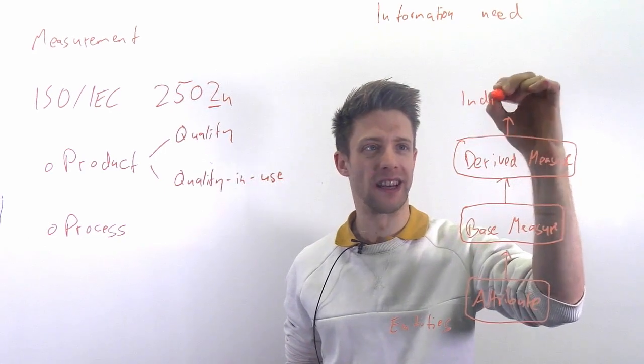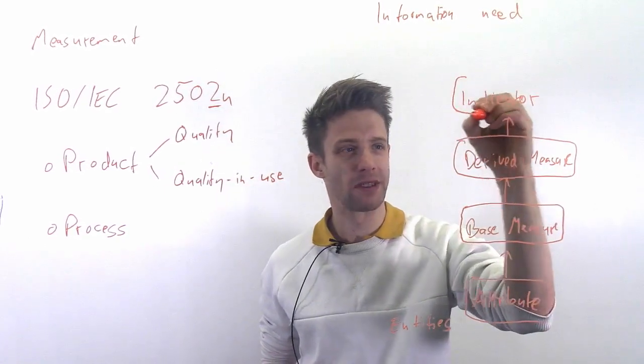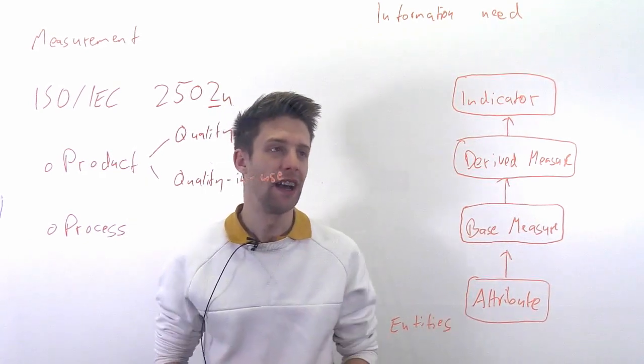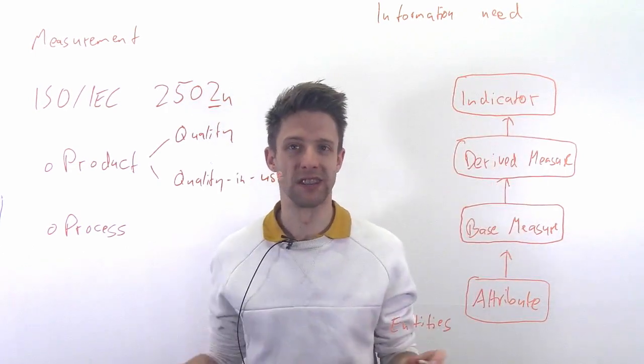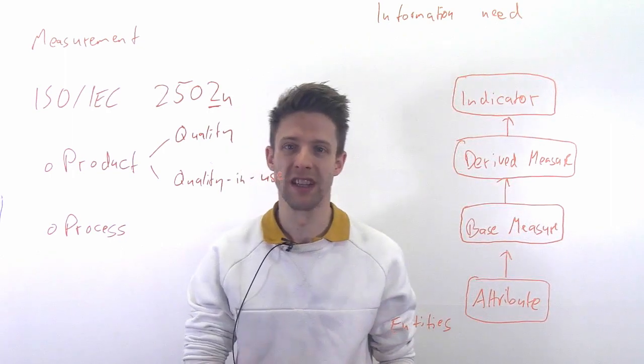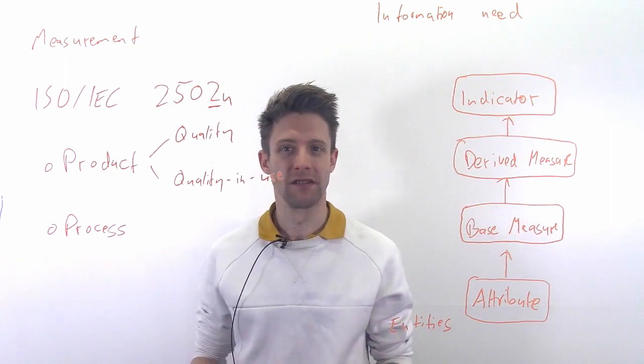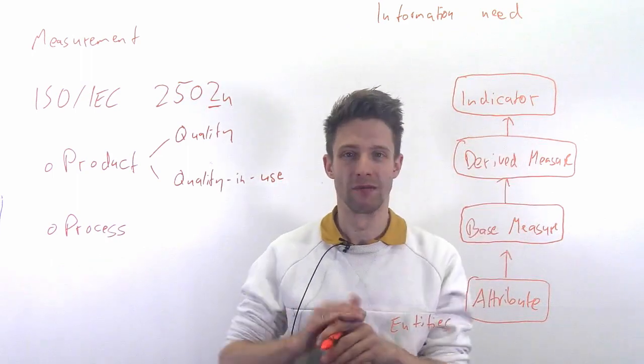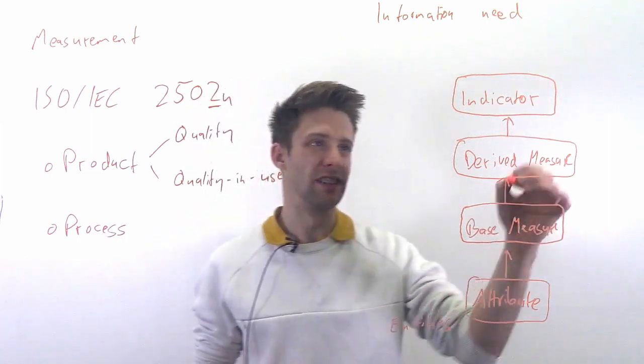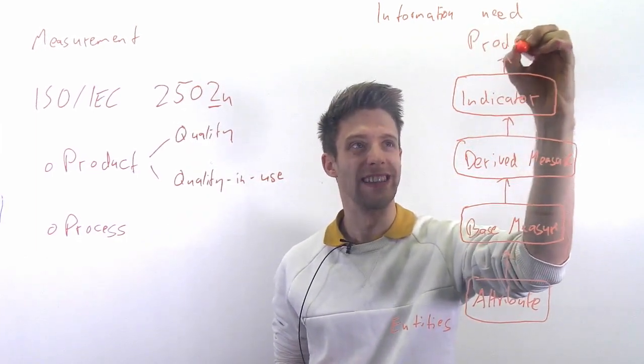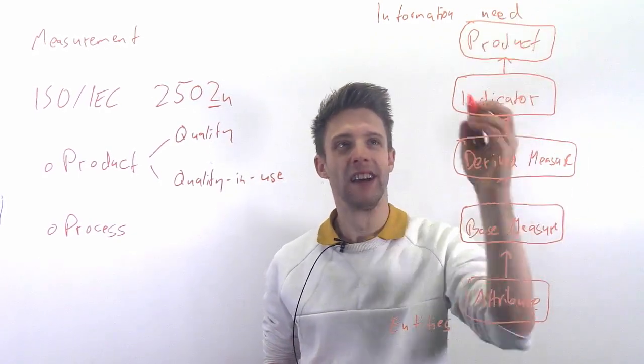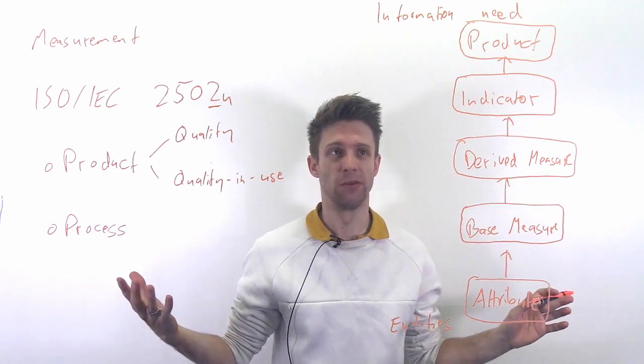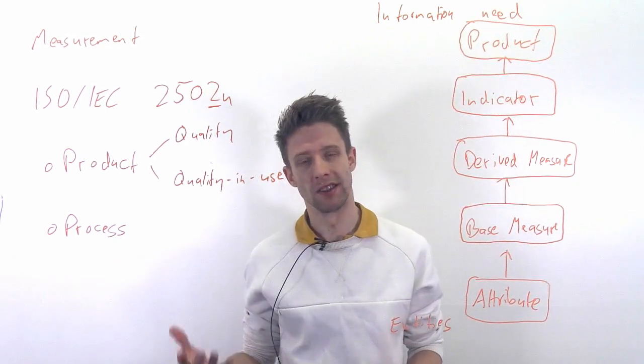So it's more interesting to look at the number of bugs compared to, or in relation to, the overall size of the product. So there's a difference whether you have 10 bugs and one function or you have 10 bugs and a hundred functions, of course. So this is where you get to the derived measures. You usually need to have multiple of these base measures together to get to something that actually tells you something. Now this is already quite good, but usually it does not quite fulfill your information need. Usually you get to something that is like an indicator - that's an abstract way to interpret this measure.